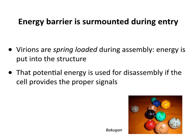How do we get over this energy barrier during entry? When you assemble viruses, you actually put energy into them. That energy will be released when the virus has to surmount the energy barrier. So we say the virions are spring-loaded during assembly — we put energy into the structure, and then we release it later to get over that barrier. That energy is used for disassembly. The cell provides a signal of some sort, the energy is released, and the virus can get over that barrier, allowing virion proteins to move so the nucleic acid can get out.